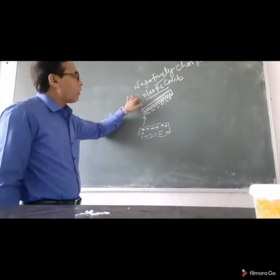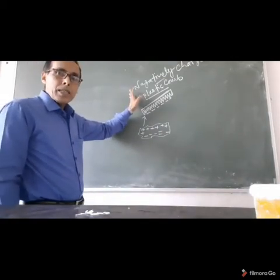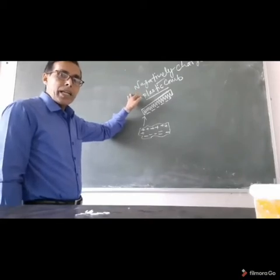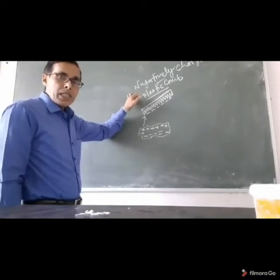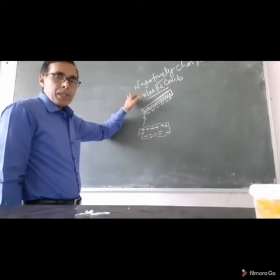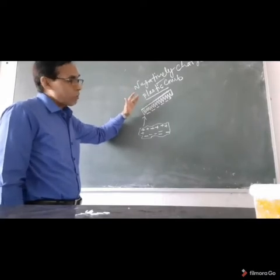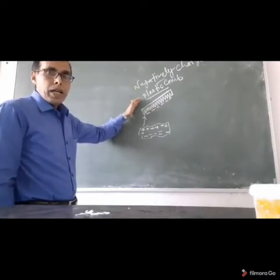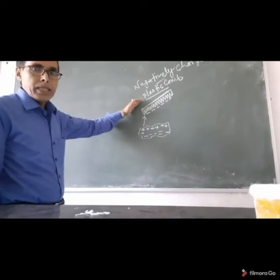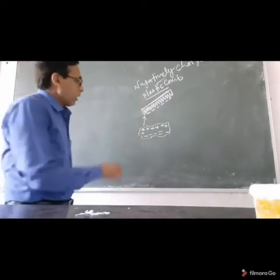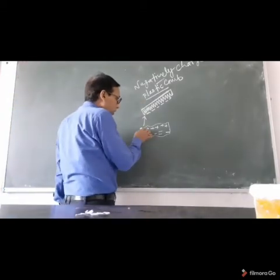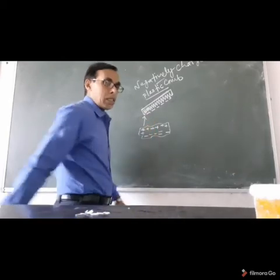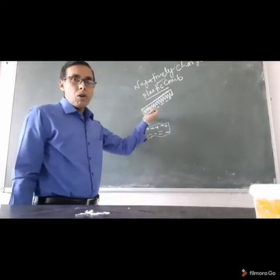So when you rub the plastic cone or plastic pen with dry hair, due to friction, the plastic cone becomes charged — it is negatively charged. When this negatively charged object is brought near small bits of paper, it attracts them.